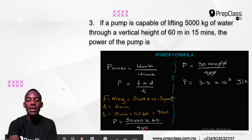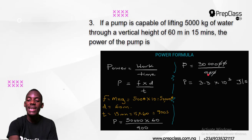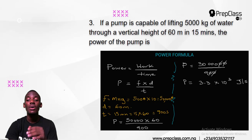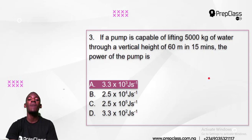50,000 times 60 is 3 million. That is 3 million divided by 900, which gives 3.3. Simplifying by canceling zeros: 30 over 9 is 3.3, and those three zeros become times 10 to the power 3. So the answer is 3.3 times 10 to the power 3 joules per second. That is the answer for question number 3.